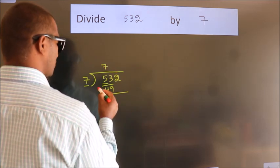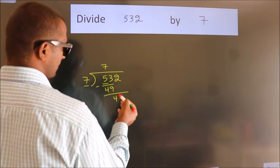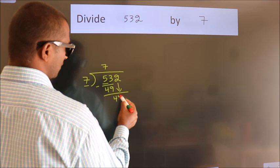Now we should subtract. We get 4. After this, bring down the beside number. So, 2 down.